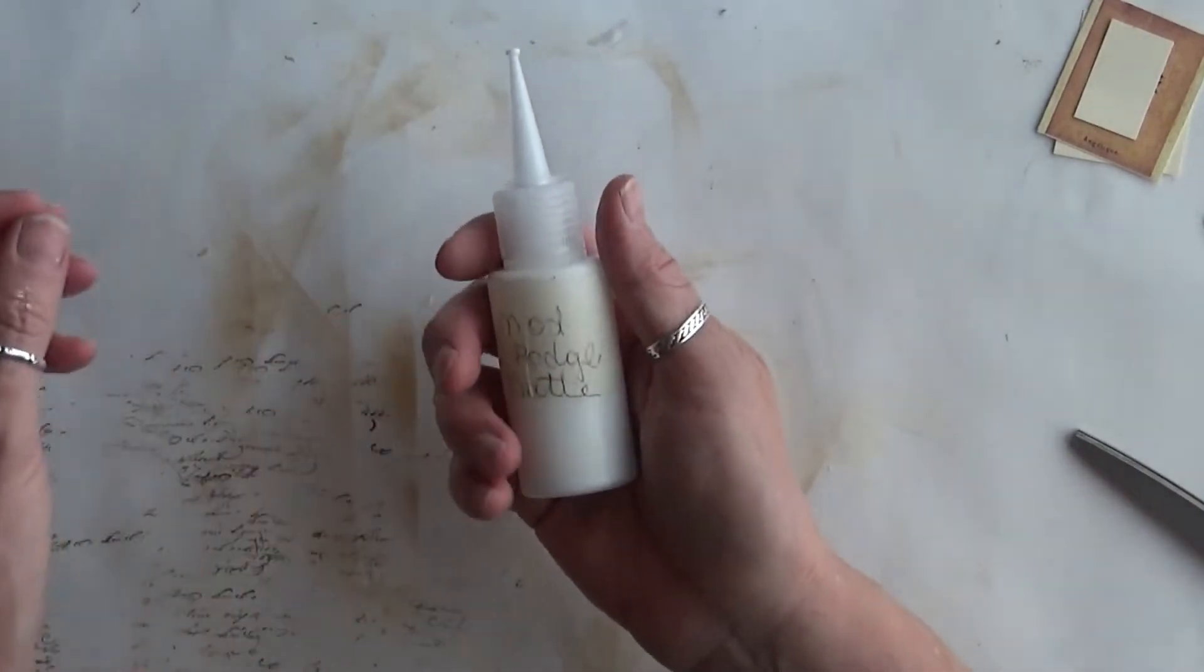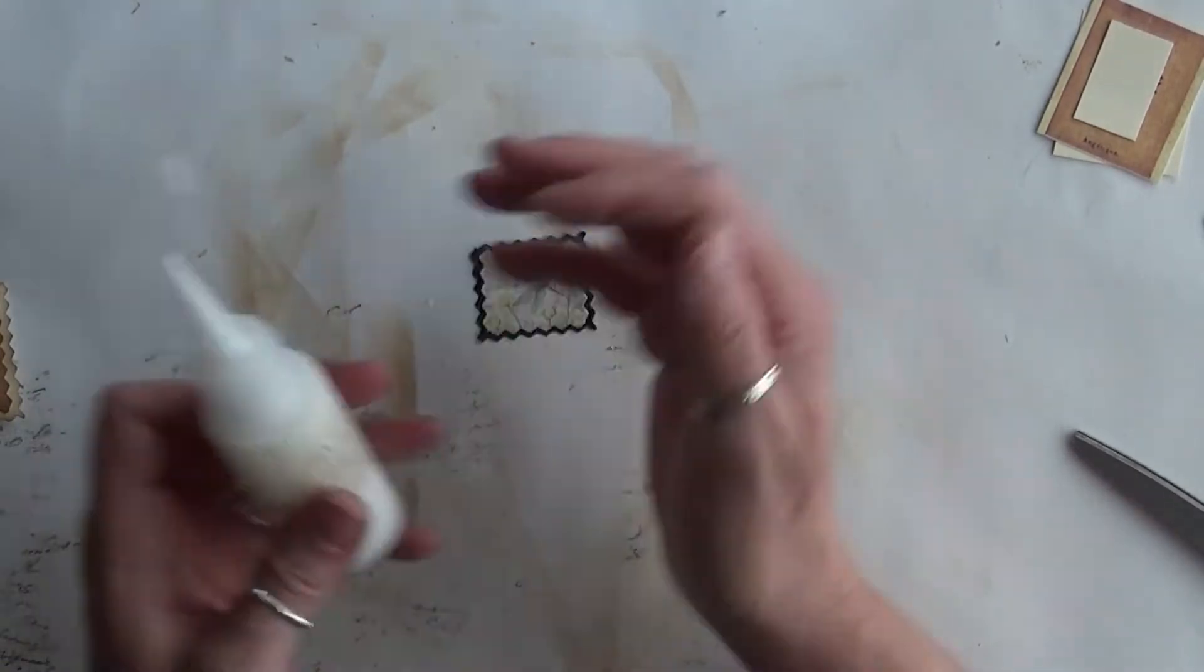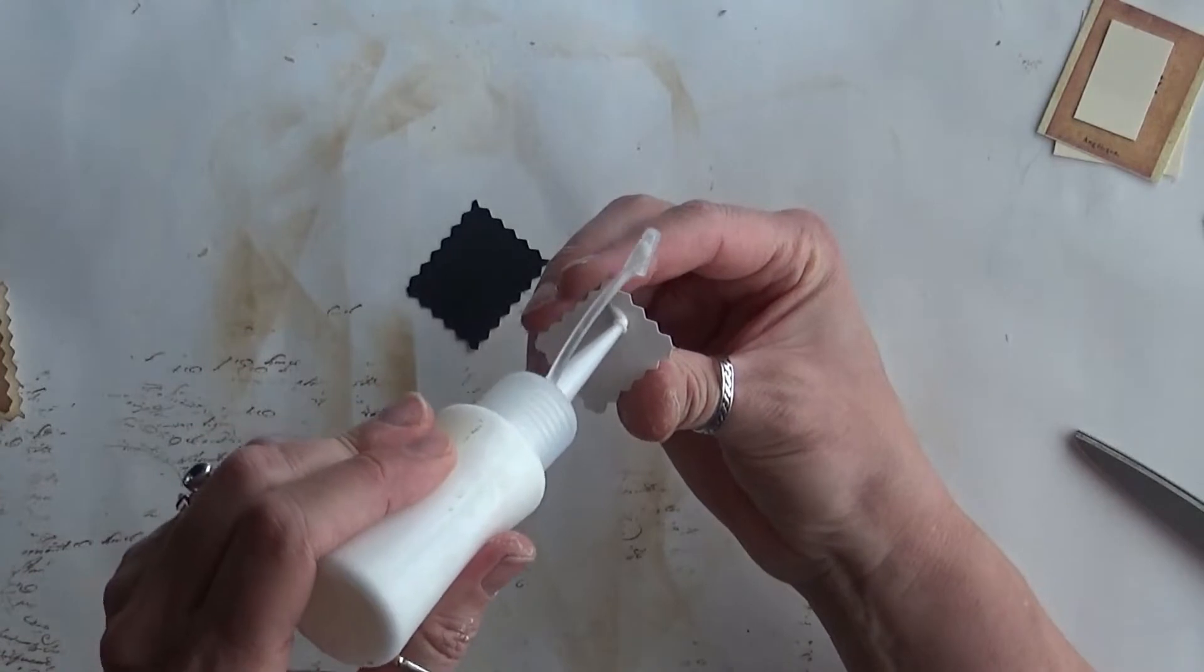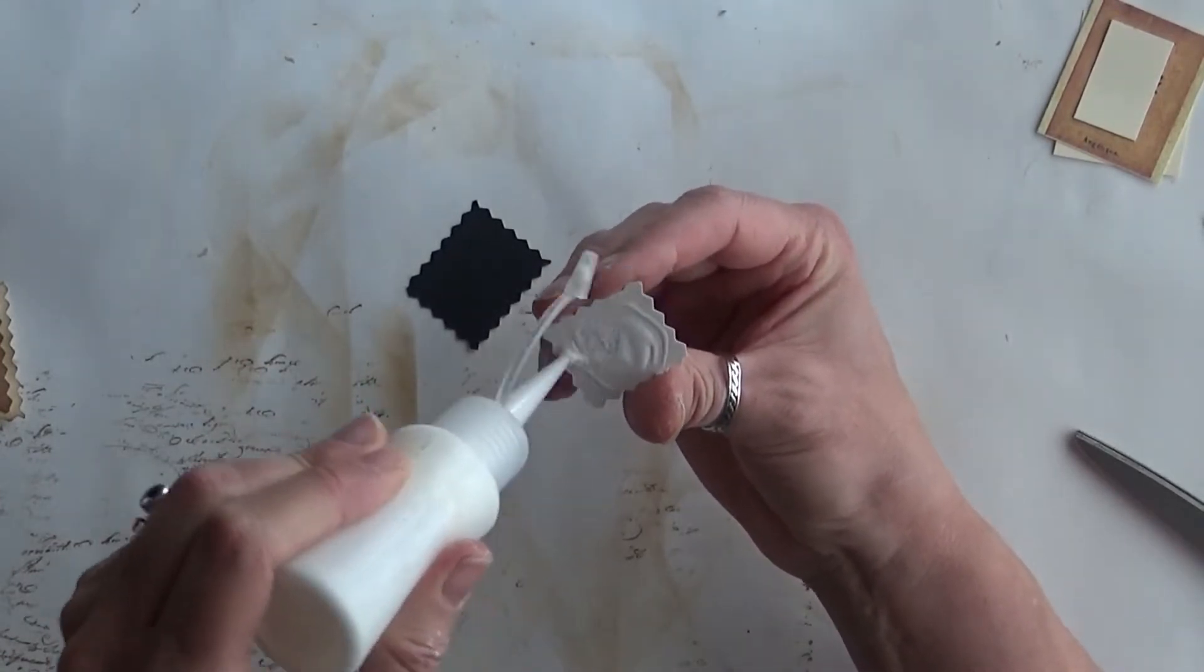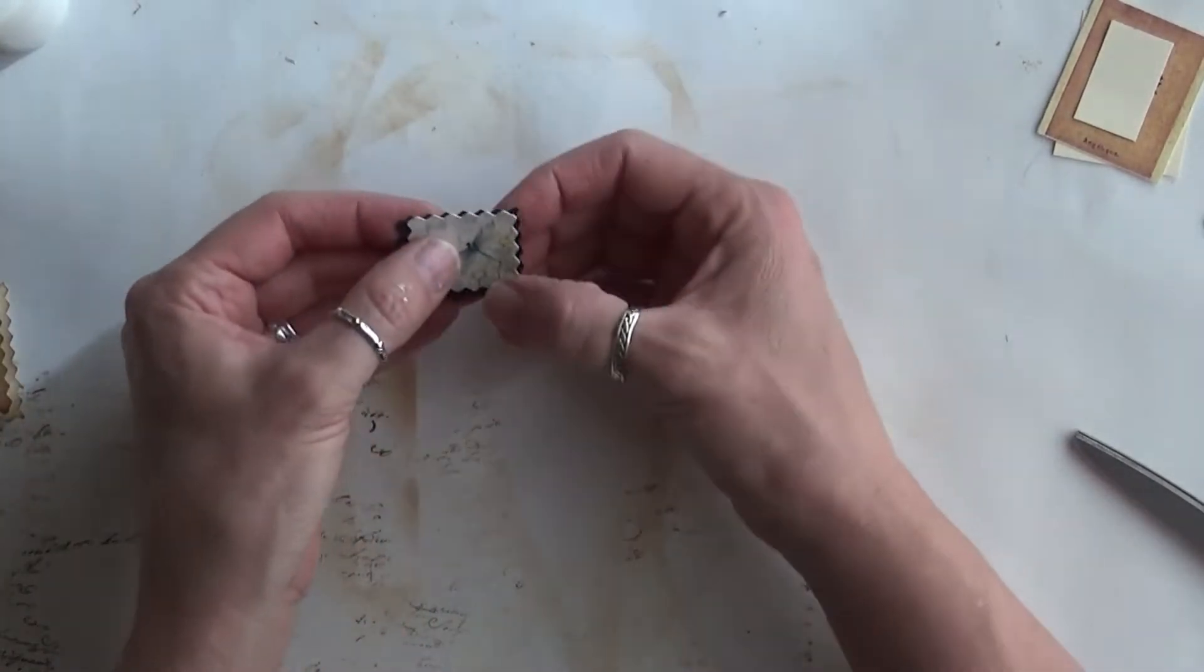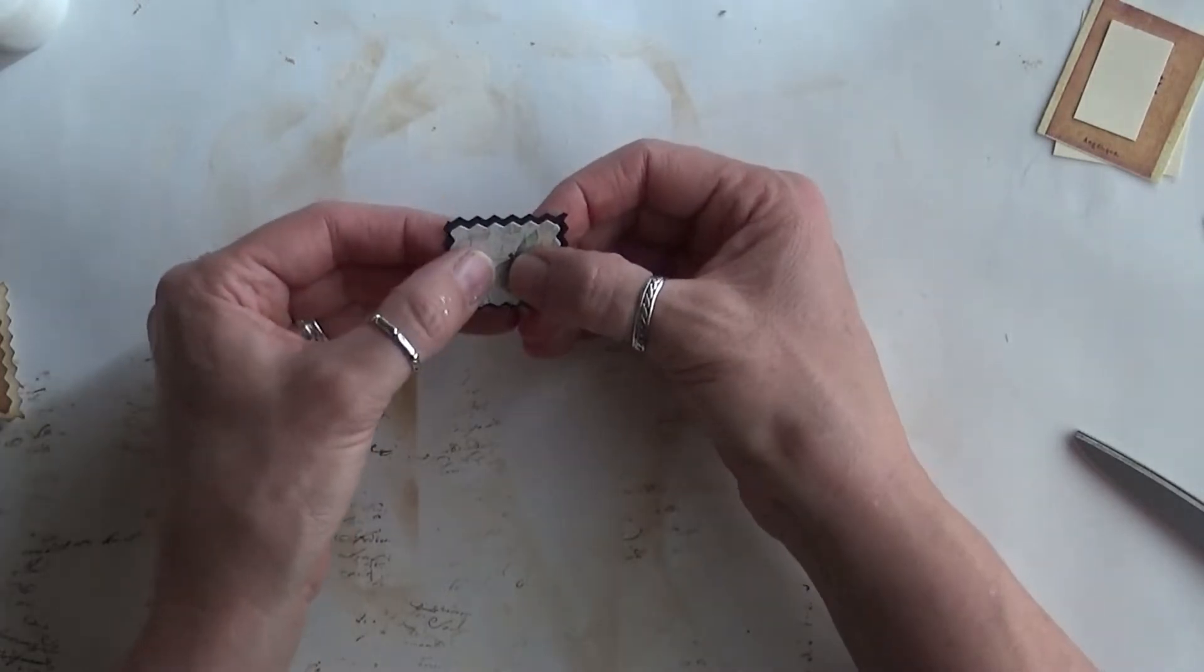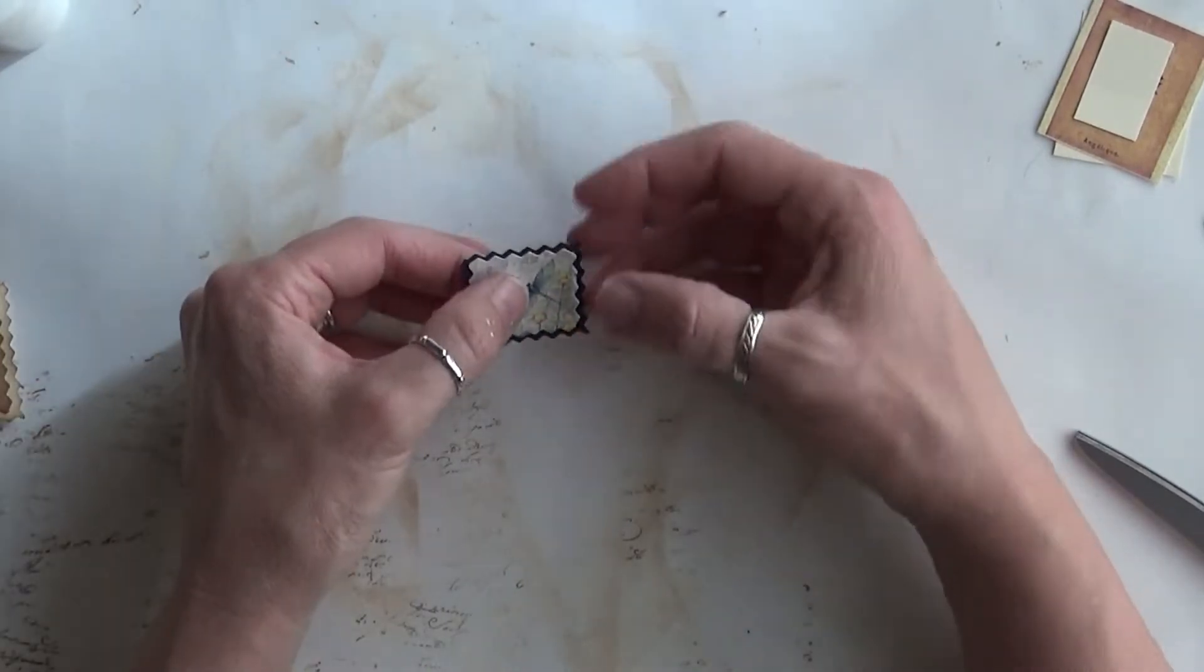I've got my little Mod Podge matte glue bottle, and all I want to do is just put it on there - I'm not gonna make sure I get the edges or get real wild about it because I want to make these fast. So I'm just putting it on there and then setting it in place to hold it secure.